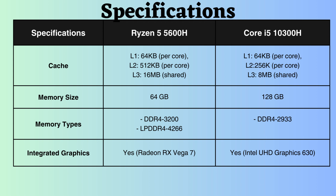The Ryzen 5 5600H supports up to 64 gigabytes of RAM, while the Intel 10300H supports up to 128 gigabytes of RAM. The Ryzen 5 5600H accommodates LPDDR4 and DDR4, whereas the Intel 10300H supports DDR4 RAM only. Additionally, the frequency support for RAM in the Ryzen is greater than that in the Intel, enhancing the communication speed between RAM and CPU in the case of the Ryzen processor.